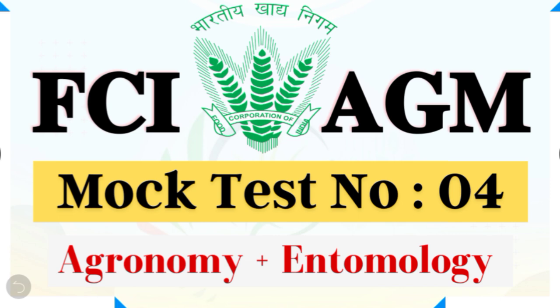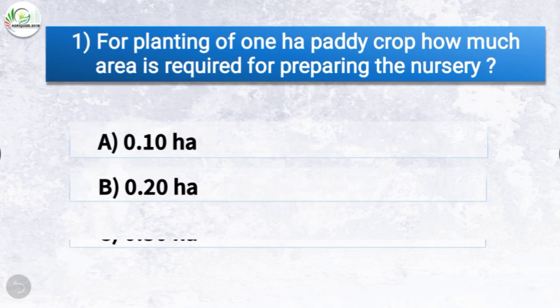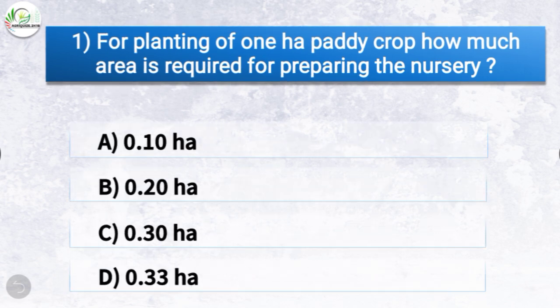Now let's start today's mock test. Question number one: for planting of one hectare paddy crop, how much area is required for preparing the nursery? The options are 0.1 hectare, 0.2 hectare, 0.3 hectare, or 0.33 hectare. The correct answer is option A, 0.10 hectare, which is one tenth of the total area. So for planting of one hectare paddy crop, 0.1 hectare area is required for preparing the nursery.